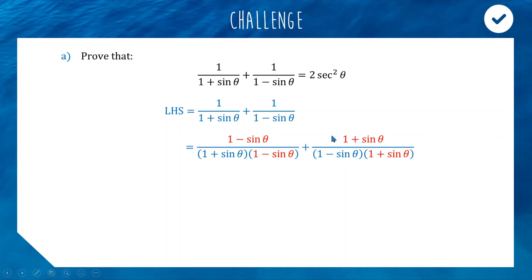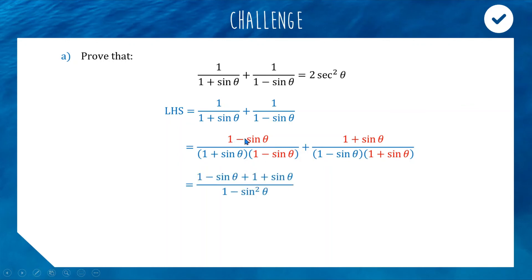Now we can add them by summing the numerators. The denominator expands as (1 + sinθ)(1 − sinθ), which by difference of two squares is 1 − sin²θ. The numerator is (1 − sinθ) + (1 + sinθ). The sine theta terms cancel, leaving 2 on top.